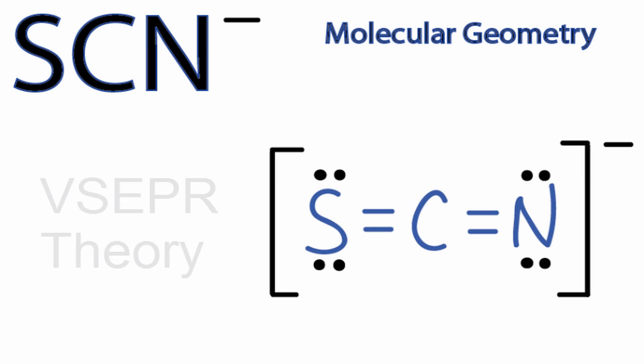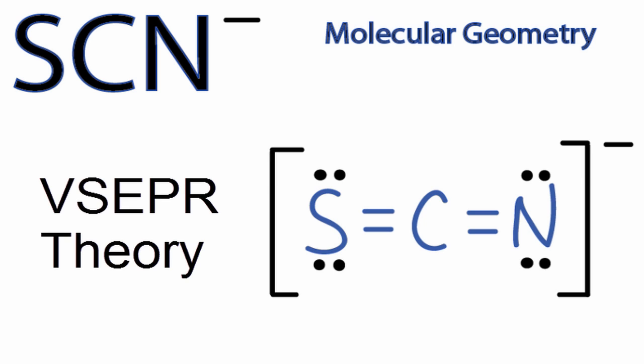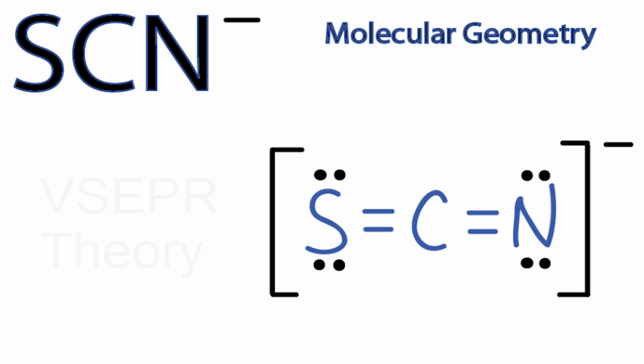In accordance with valence-shell electron pair repulsion theory, that means that the sulfur and the nitrogen are going to be as far away from each other as they can possibly be. Since they're on the ends of the molecule, it's probably going to be a linear molecule.